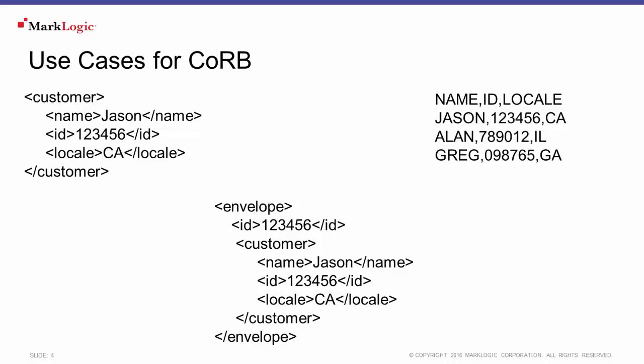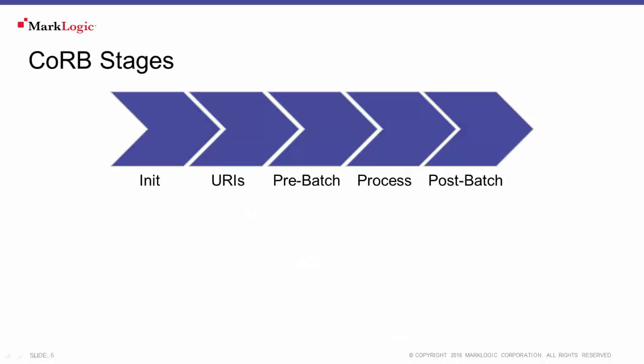So how does CORB do this? Under the hood, CORB has five configurable stages that allow for batch processing. Each can be configured with XQuery and MarkLogic or by writing a custom Java plugin.